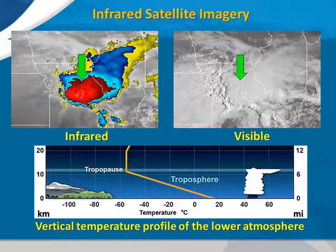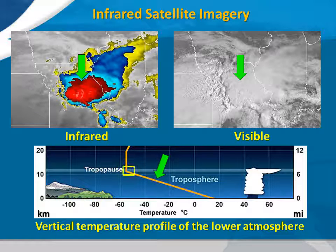The bottom picture shows an average vertical temperature profile of the lowest 20 kilometers, or roughly the lowest 12 miles of the atmosphere. The orange line indicates that, generally speaking, the atmosphere cools quite rapidly through the lowest 6 or 7 miles. On average, when we reach about 7 miles above sea level, the temperature has cooled to well below minus 50 degrees Celsius, equivalent to minus 58 degrees Fahrenheit. These very cold temperatures aloft equate to the very bright colors we see in the infrared image on the top left.